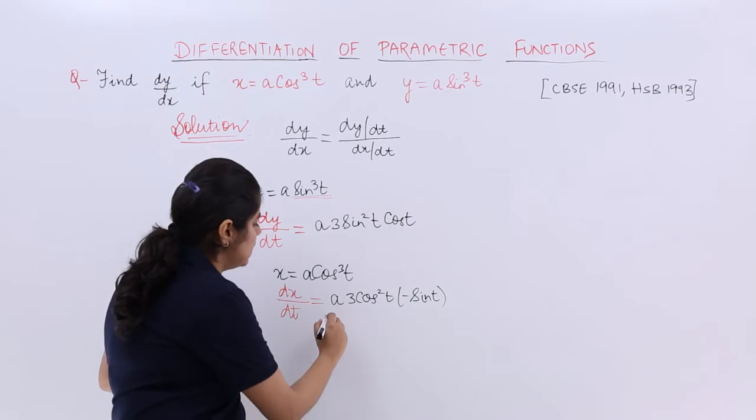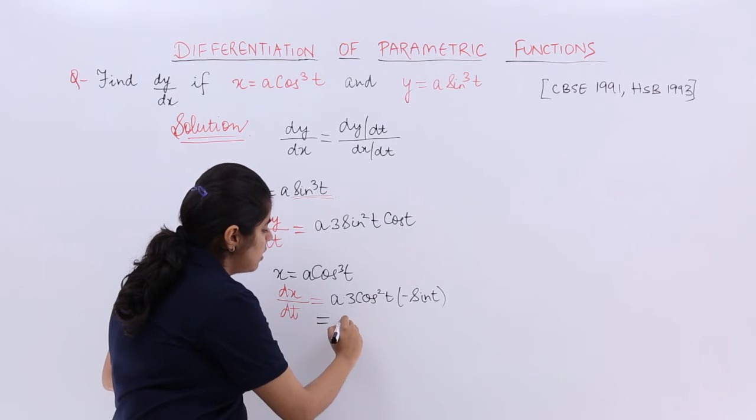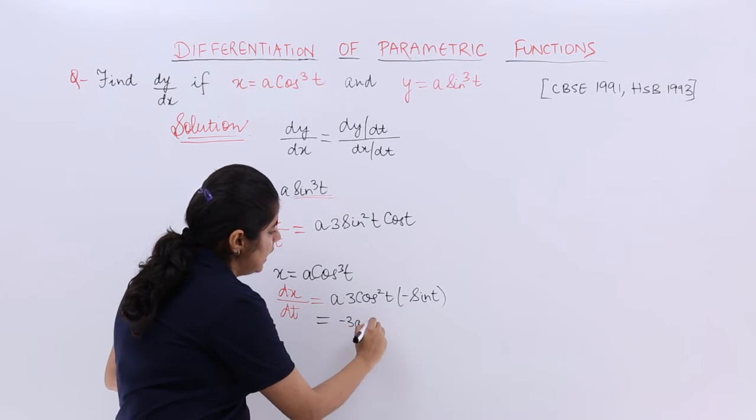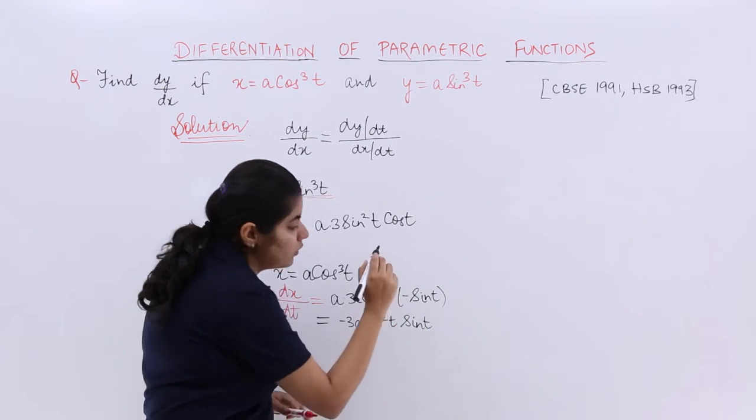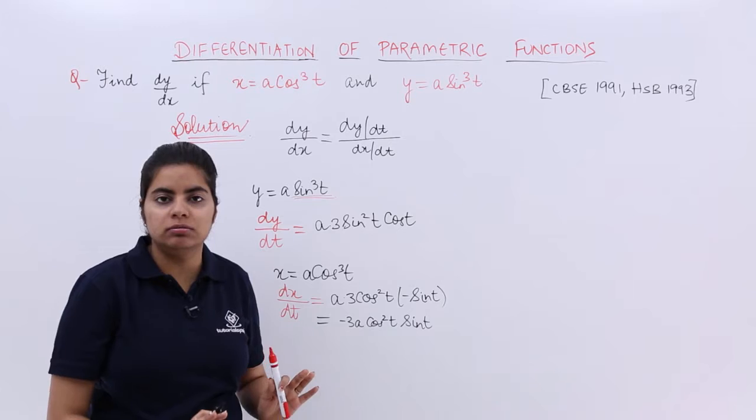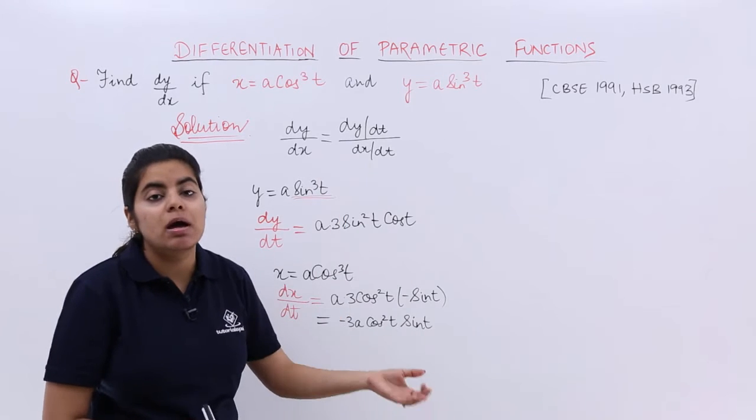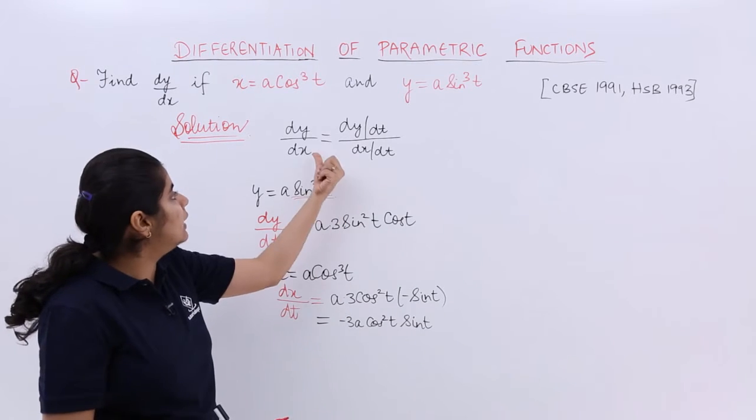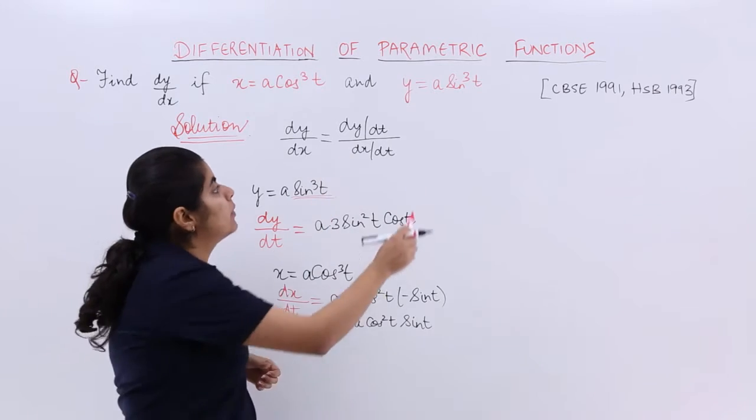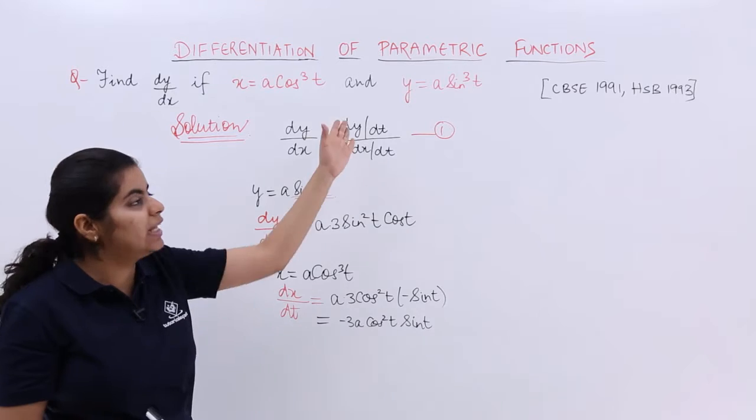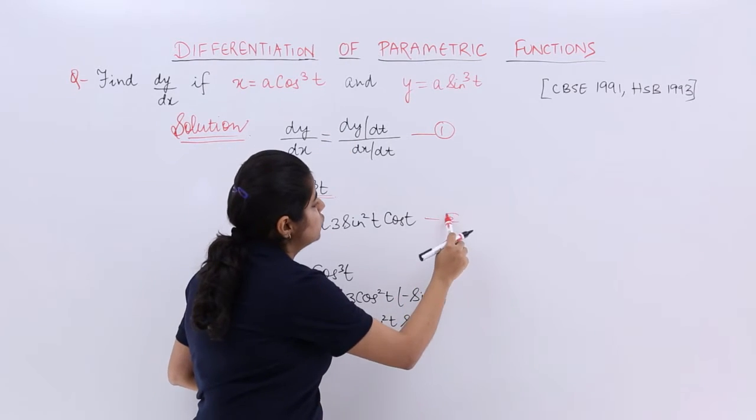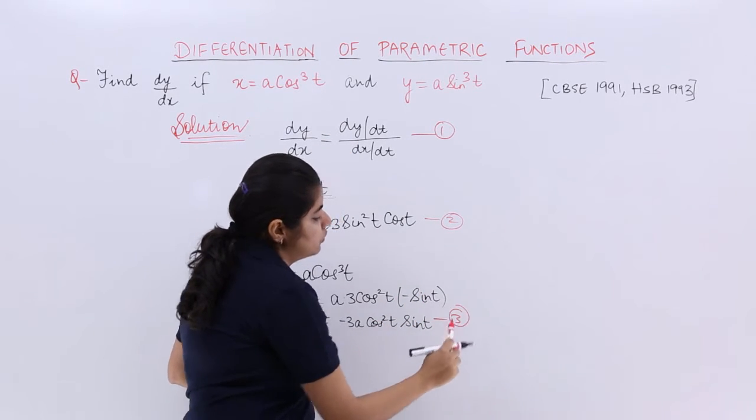So what happens? It is nothing but minus 3a cos squared t sin t. Now some students would leave the answer till here, that means they find it complete. But the solution is not complete until and unless you put the values you obtained in dy/dt and dx/dt in equation 1. So let me name the equations. This is 1, 2, and 3.